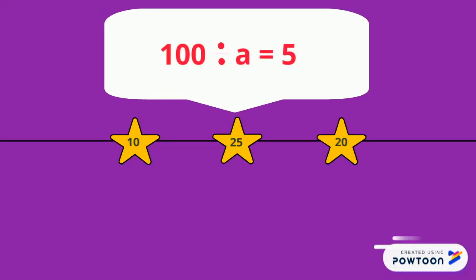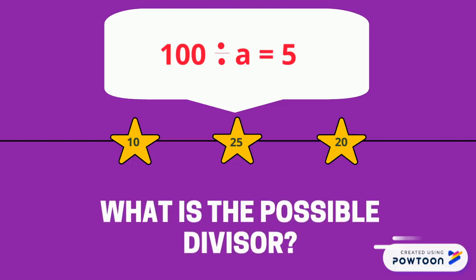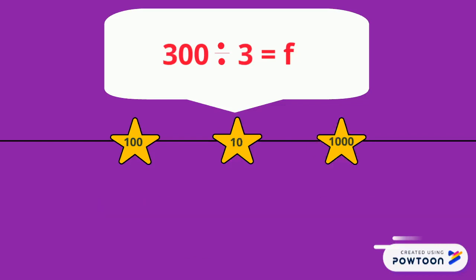In the equation 100 divided by a is equal to 5, a is a variable that represents our divisor. So what then is our possible divisor? If you said 20, you are correct. Good job guys. Let's look at this example.